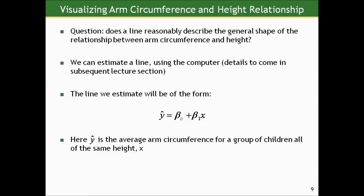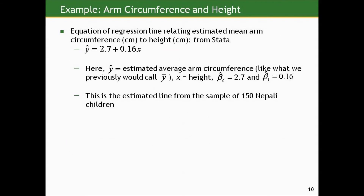We can estimate this line using the computer. The line we're estimating has the form y-hat equals b-naught plus b1 times x. Here, y-hat represents the average arm circumference for a group of children all of the same height x. Running this in Stata gives the equation y-hat equals 2.7 plus 0.16 times x. So y-hat is the estimated average arm circumference, x is height, the intercept estimate b-naught-hat is 2.7, and the slope b1-hat is 0.16. This is estimated from a sample of 150 children, trying to establish the relationship for all Nepali children less than a year old.